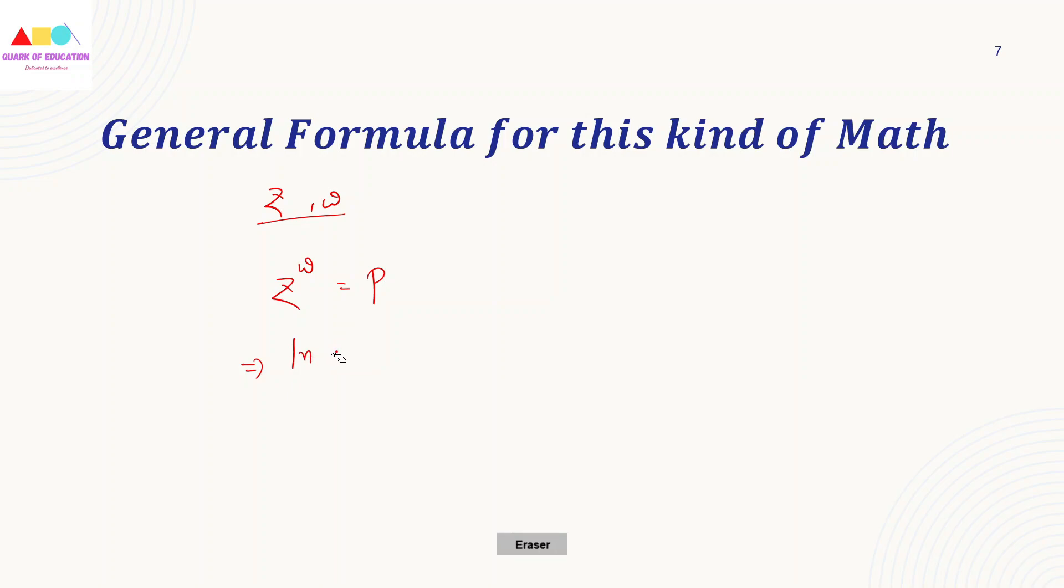For z to the power w, the general formula is e to the power w ln z. So if we have 2 to the power 3i, we write it as e to the power 3i ln 2. This is how we solve the problem easily.